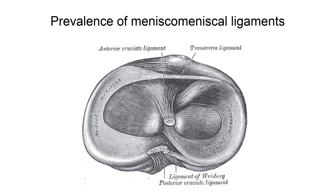The transverse ligament is reported in 58% of subjects and is thus the most prevalent of four described meniscal ligaments. The other ligaments, all three of which are reported with a frequency of less than 4%, are the posterior transverse ligament, described as a bundle of fibers connecting the posterior horns of the menisci, and the medial and lateral oblique ligaments.